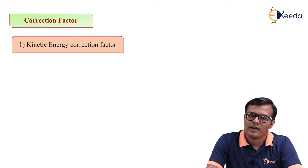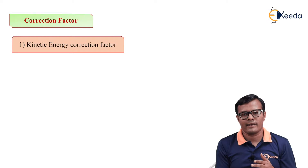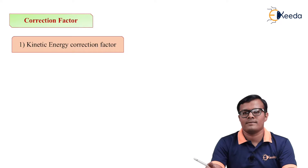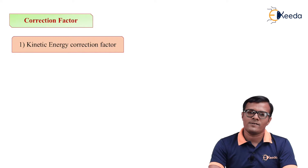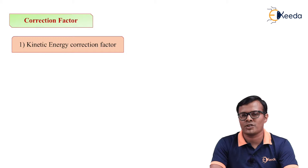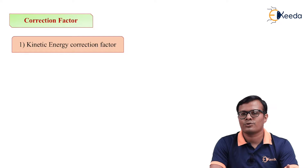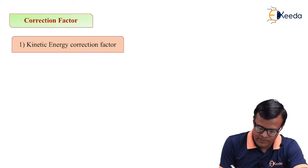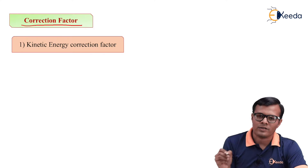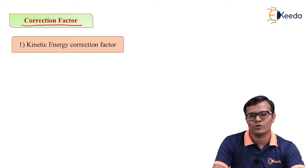As its name indicates, correction factor means that factor which is used to correct the term. So that term may be kinetic energy or momentum. Accordingly, it is named as momentum correction factor and kinetic energy correction factor. In a practical scenario, it is obvious that theoretical results are not matching with actual results. So generally, we find actual results and correct them to get real ideas of theoretical results, so that we should not have any errors in our calculations. So for that purpose, we will find a new term that is correction factor. Correction factor is that factor which, when multiplied with measured or practical values, gives us actual or theoretical values.